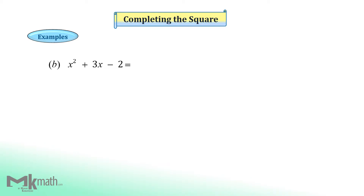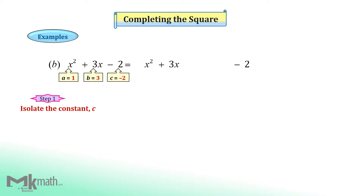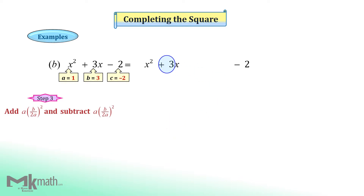Let's take a look at example b. First, identify each a, b, and c value. Step 1: isolate the constant negative 2. Step 2: this question has a equal 1 already. Step 3: add half the coefficient of the x term squared and then subtract the same value to keep the original expression.